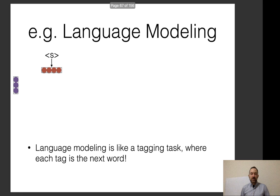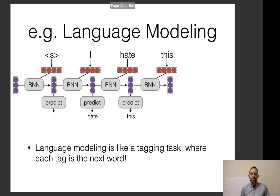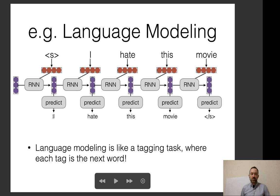Taking the example of language modeling: we feed in each word, starting with a start-of-sentence symbol so we run the RNN once before predicting the first word. We then feed in the next word, run it through the RNN, make a prediction — next word, RNN, prediction — and continue until we terminate the sentence. Language modeling is a bit like a tagging task where the tag to predict for each word is the next word in the sentence.